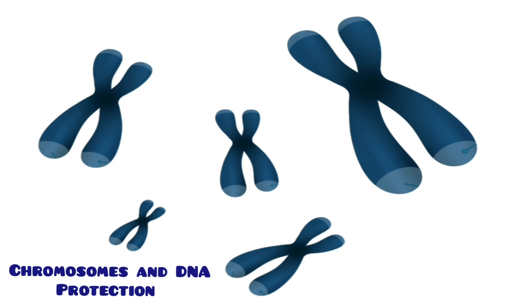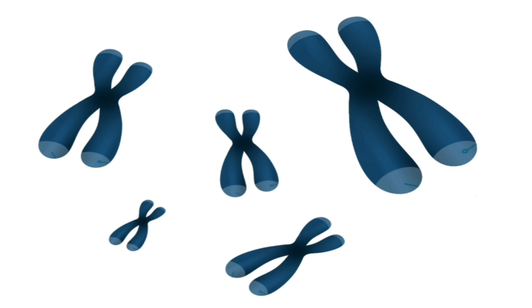As we said, after each cell division a piece of telomere will be cut. Imagine there is no telomere — when the cell divides, it may cut off genes instead of a piece of telomere, causing many mutations. So the presence of the telomere protects the DNA and chromosome.